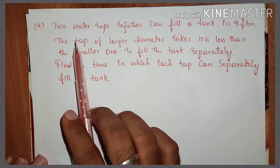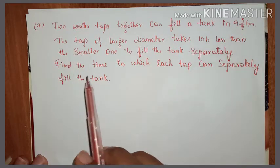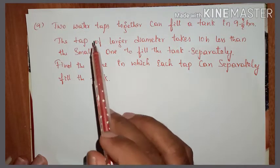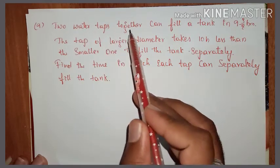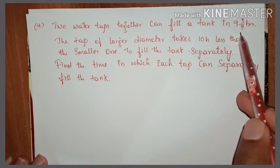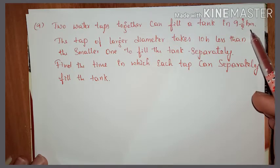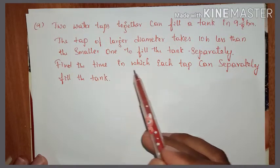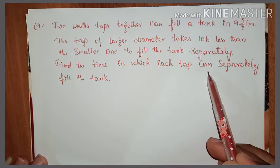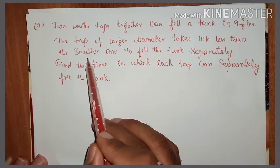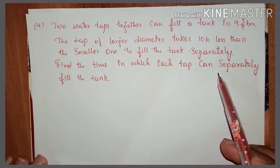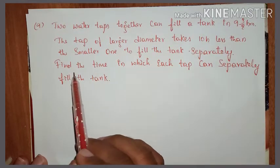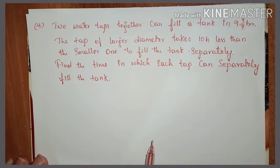There are two taps — one with larger diameter and one with smaller diameter. Together they can fill the tank in nine and three-eighths hours. We need to find how much time the larger diameter tap as well as the smaller diameter tap will each take to fill the same tank separately.